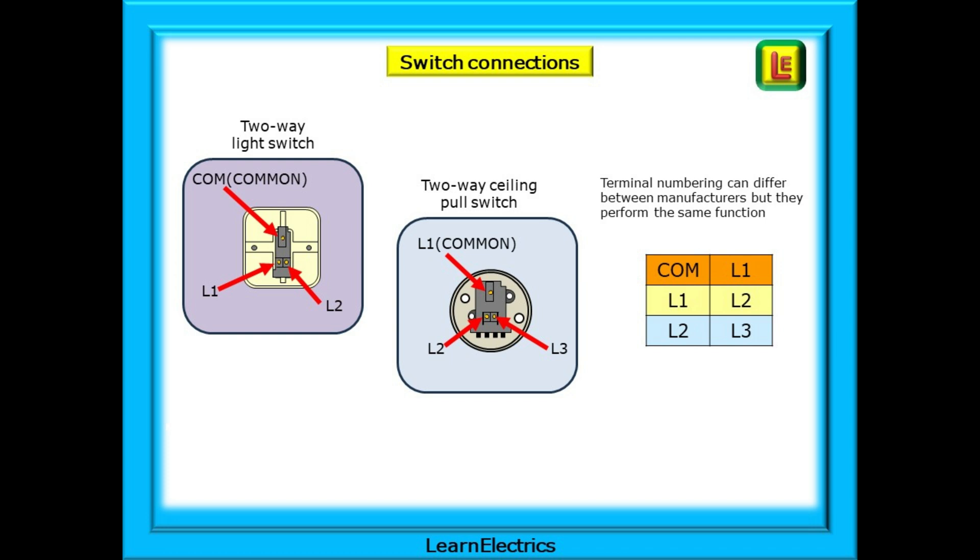Terminal numbering can change between manufacturers. Some will label the terminals as COM or common and L1 and L2. Others will label them as L1, L2 and L3. The little table shows the relationship. If your switch only uses one, two and three then the common is the L1 terminal.